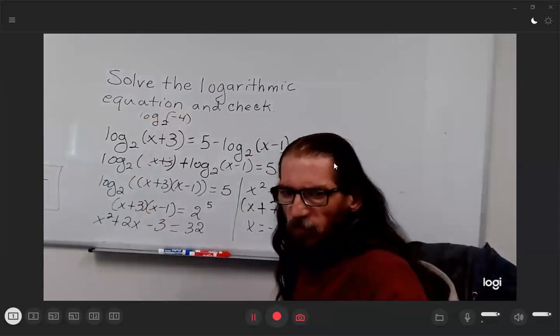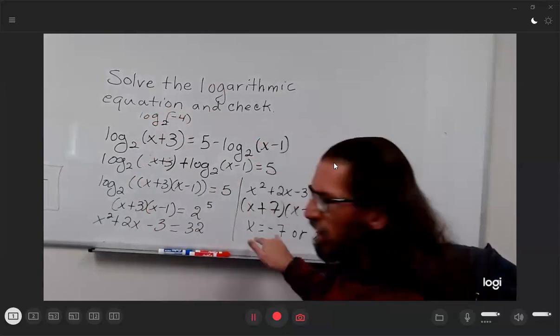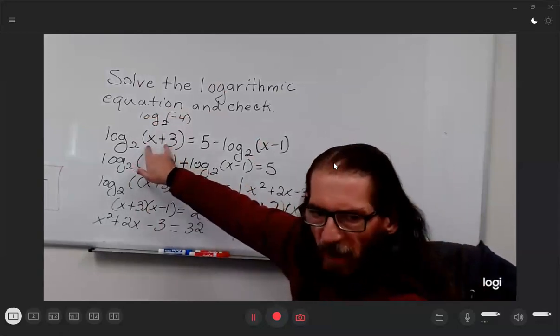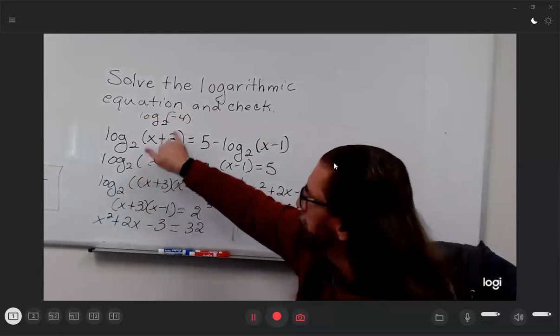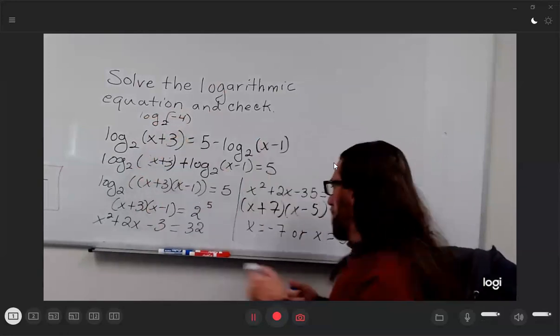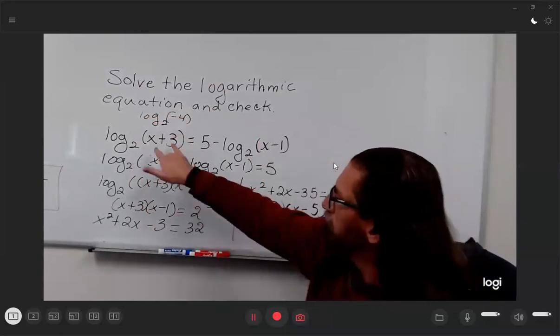And the domain of logarithms is positive numbers only. It's not that it's a -7, it's that when I put that in and add 3, I still have a negative. So that's why I'm going to have to reject x = -7. x = 5 is going to make that 8.